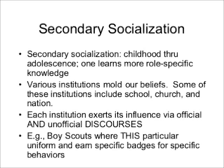After we learn the very basic rules — not complex at all, just a very basic understanding of how the world works — we move into processes of secondary socialization. Secondary socialization occurs from childhood through adolescence, and this is when somebody learns more role-specific knowledge, getting more nuanced understandings of the roles they have to play in a culture. A number of different institutions help mold these beliefs — it's not just the caregiver. These institutions include schools, church, nation, and national discourses.